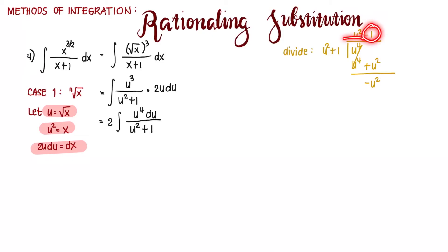Negative 1 times u squared is negative u squared. Negative 1 times positive 1 is negative 1. We subtract, that's cancelled. We have 0 minus negative 1 gives us 1.